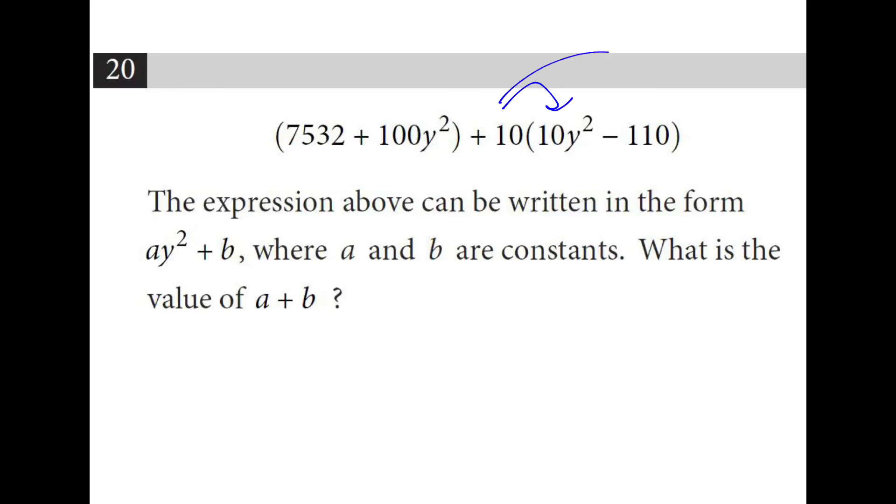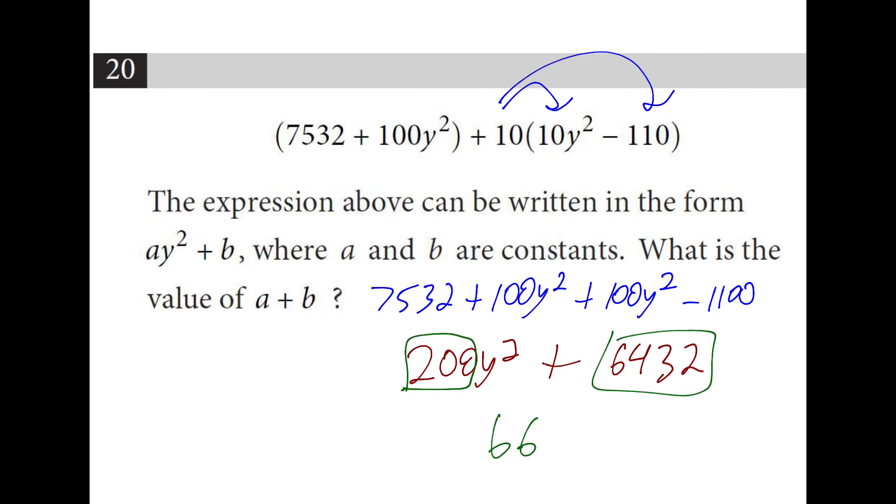First I'll distribute the ten. Then I combine like terms. Then I'm going to add together the coefficients. So two hundred plus sixty-four thirty-two is sixty-six thirty-two.